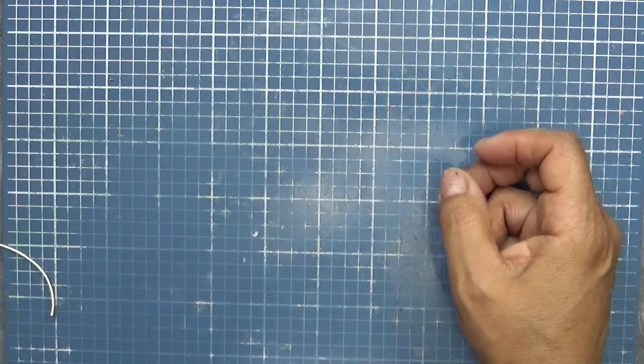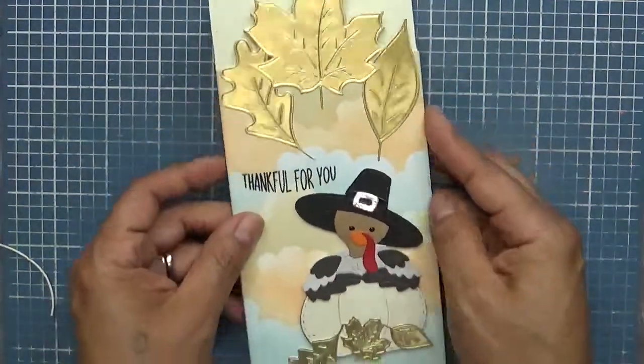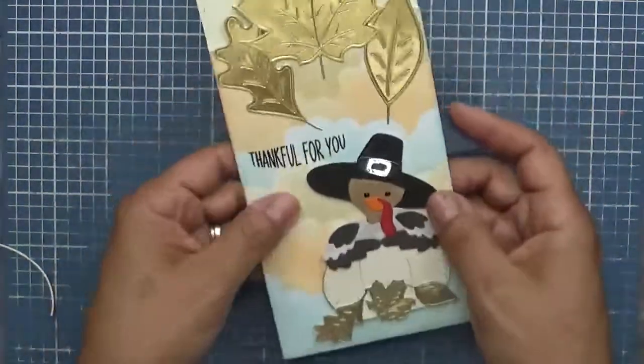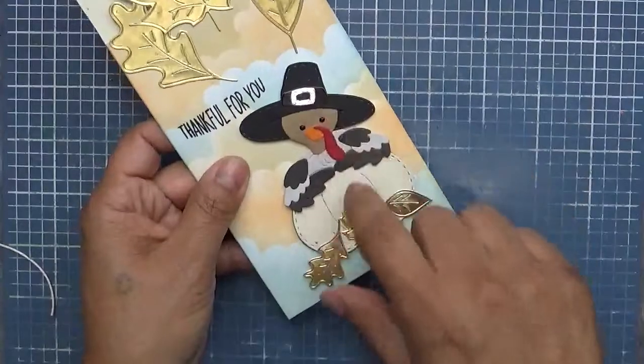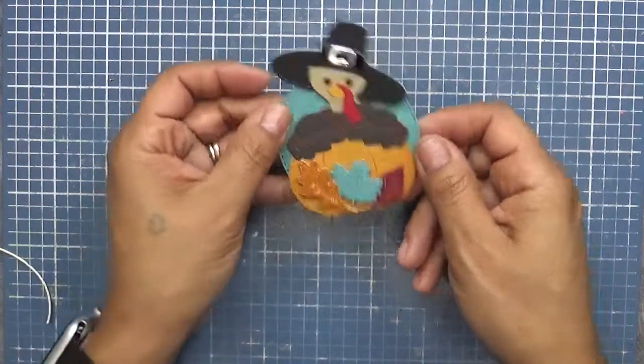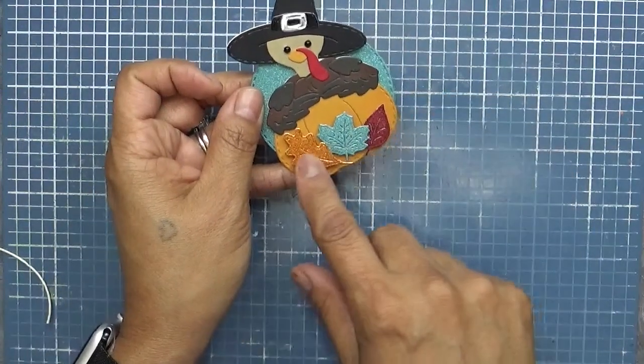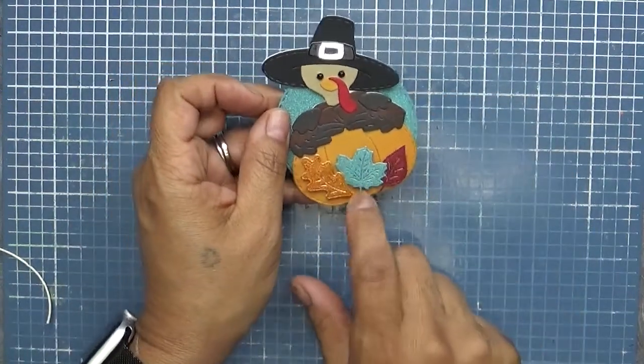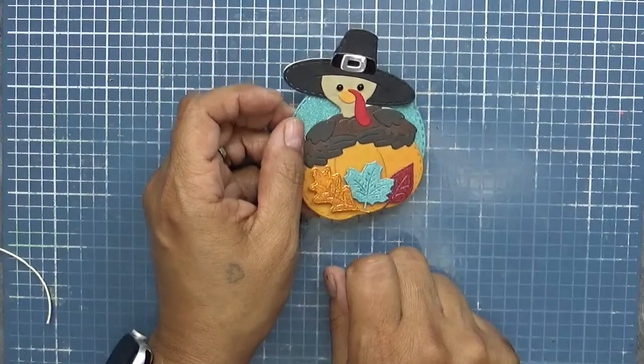Now remember the card I made yesterday. Remember this little card I made yesterday. Well, I actually put together the turkey for you on camera. So what I did was I use the smaller of the little leaf dies and I use the little, I have this, it's like a glitter.